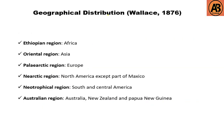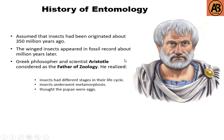Now I would like to tell about the geographical distribution of insects according to Wallace (1876). The regions are: the Ethiopian region in Africa, the Oriental region in Asia, the Palearctic region in Europe, the Nearctic region in North America except part of Mexico, the Neotropical region covering South and Central America, and the Australian region including Australia, New Zealand, Papua New Guinea, etc.